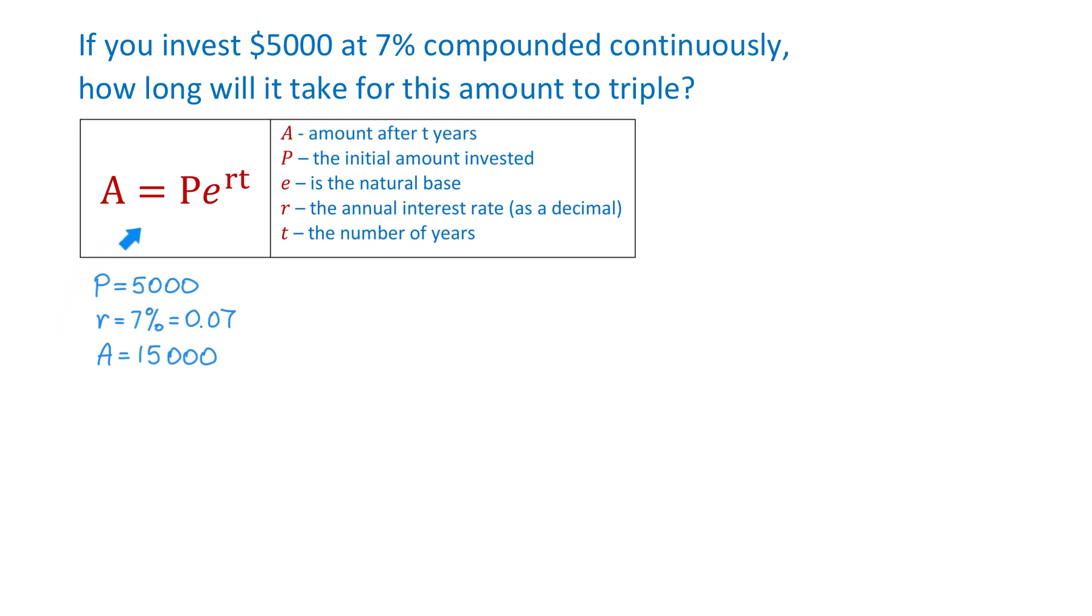We need to replace these numbers in the formula and find the number of years that will take 5,000 to grow to 15,000. Then we will have 15,000 equals 5000e to the power of 0.07 multiplied by t.